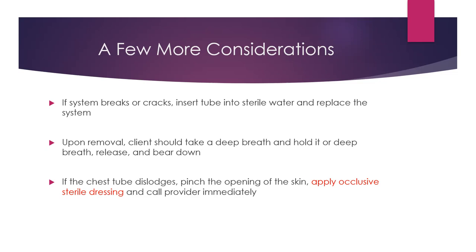If the patient is going to have the chest tube removed because they got better, have them take a deep breath, hold the breath, release, and bear down — that Valsalva maneuver as the chest tube is removed helps keep the pressure equalized and keeps air from sucking back into the pleural space. If the chest tube dislodges, pinch the opening of the skin together — there will be an incision where the chest tube is inserted, typically sutured in place but sometimes they dislodge. Pinch the skin together, apply the occlusive sterile dressing over that site, and call the provider immediately.